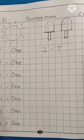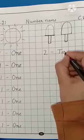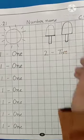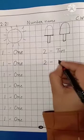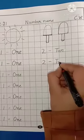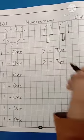T. W. O. Two. Now, children, write once again. T. W. O. Two.